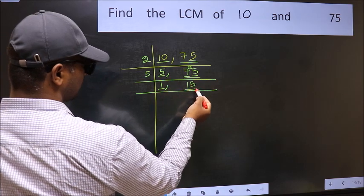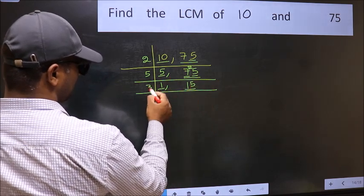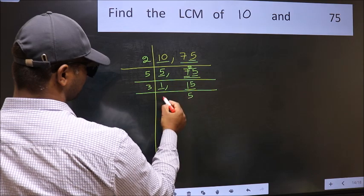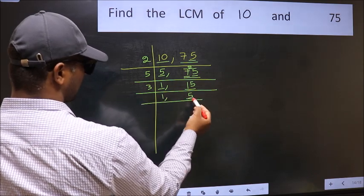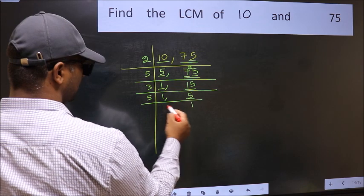Now we got 1 here. So focus on the next number, 15. 15 is 3 times 5. Now here we have 5. 5 is a prime number. So 5 once is 5.